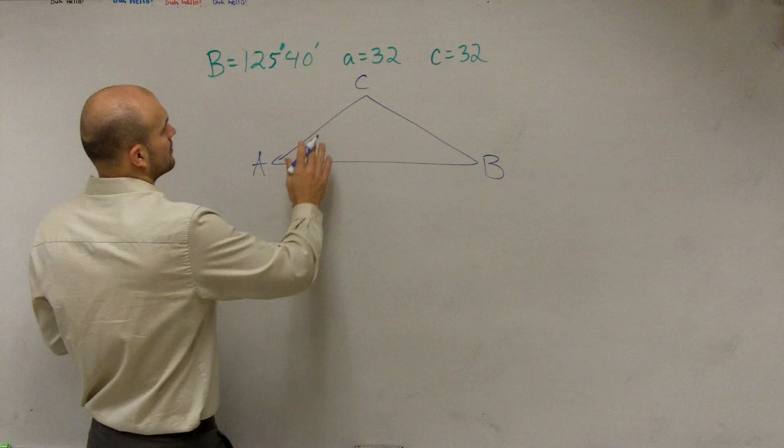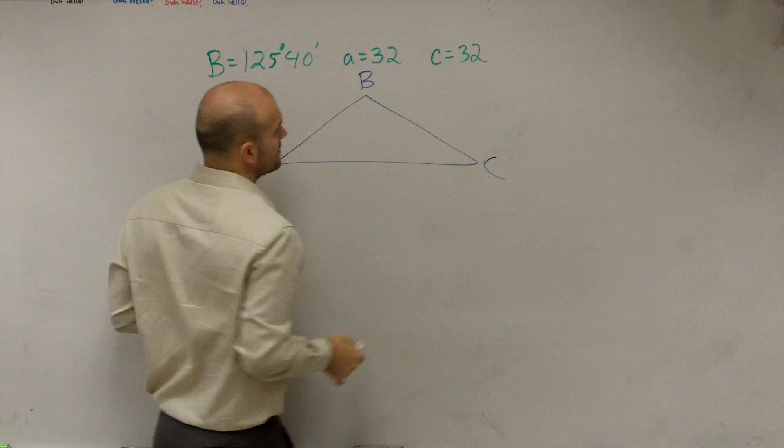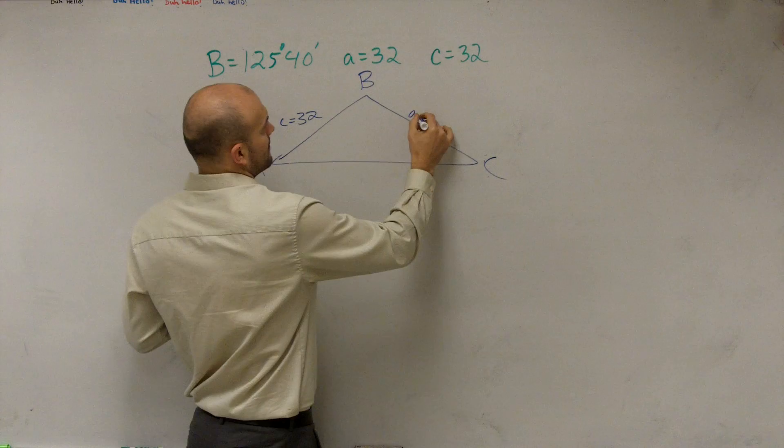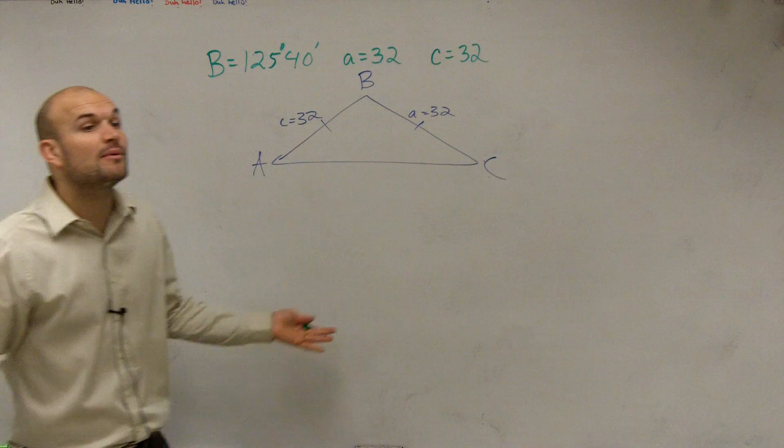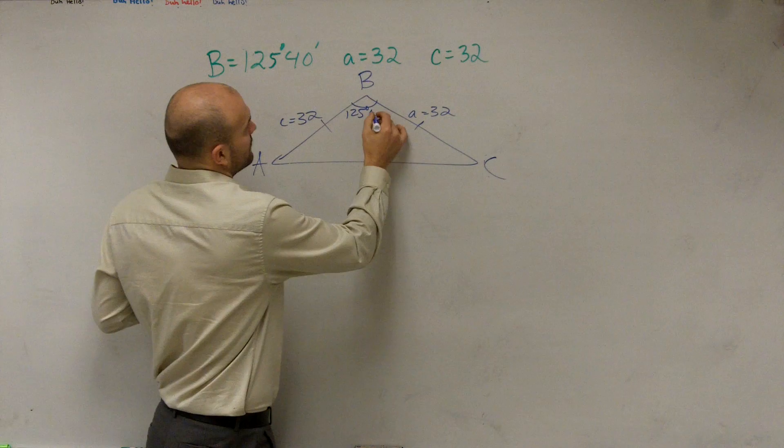Actually, let me label it like this. It doesn't really matter, guys. I just how you want to label it. But you notice that C is going to be 32, and A is equal to 32. Therefore, those two angles are equal, right? And remember, whenever you have an isosceles triangle, and we know that B is 125 degrees and 40 minutes.